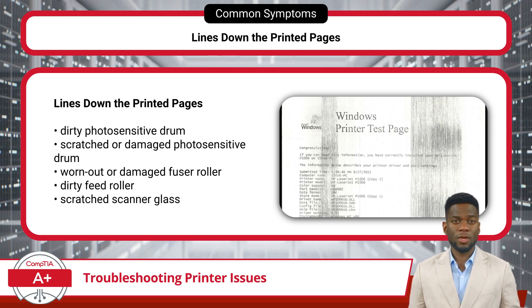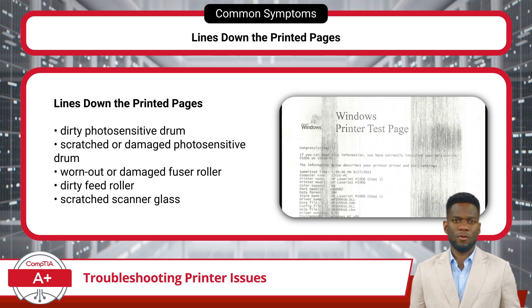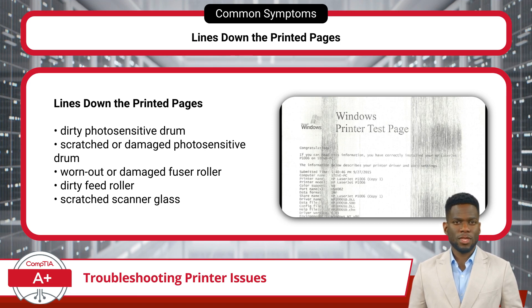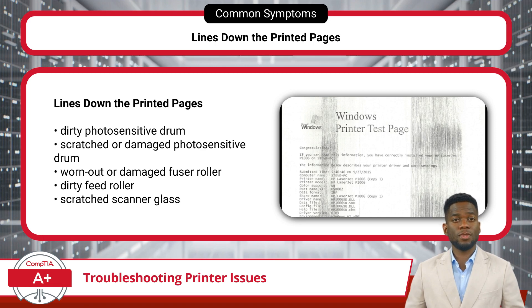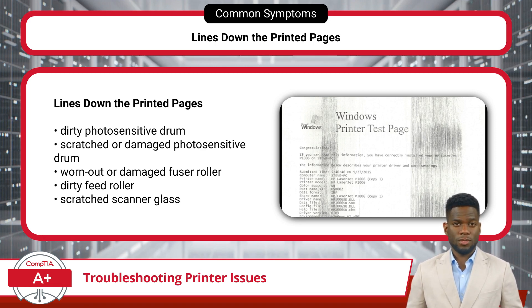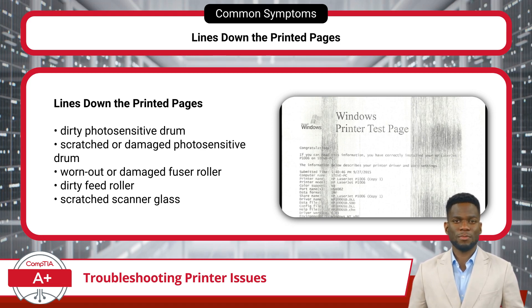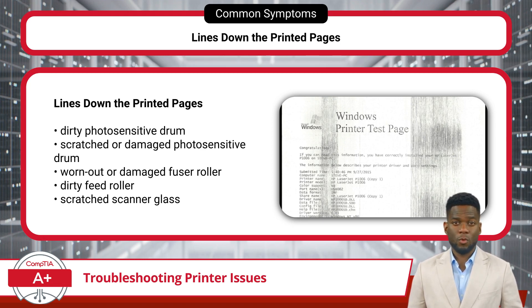For the issue of lines down the printed page, in a laser printer this could be caused by an accumulation of debris on the photosensitive drum, or scratches on the imaging drum. Issues with the fuser roller — whether due to wear or damage — can also manifest as lines on printed pages. A dirty feed roller can result in inconsistent paper feeding, and scratches on the scanner glass can cause streaks or lines to appear on scanned or copied documents.